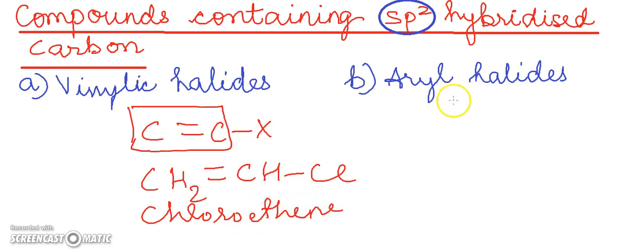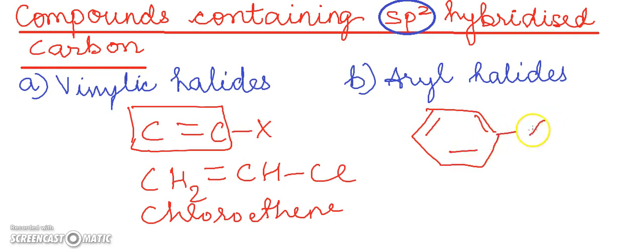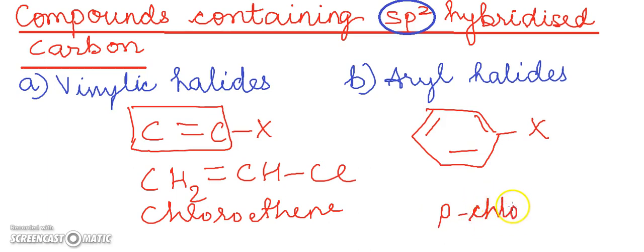Next we have the aryl halides. Aryl halides are the halides in which the halogen atom is attached to the sp2 hybridized carbon of an aromatic ring. This means there is an aromatic benzene ring with alternating double and single bonds, and the halogen atom is attached directly to this benzene ring. For example, we can have para-chlorotoluene.